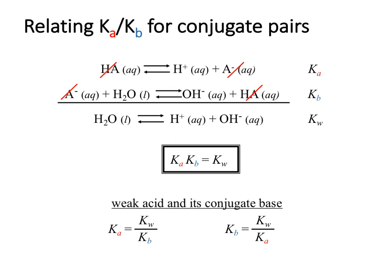How do Ka and Kb relate for conjugate acid-base pairs? If we have common ions that show up in our conjugate pairs, we can utilize this relationship: Ka times Kb equals Kw.